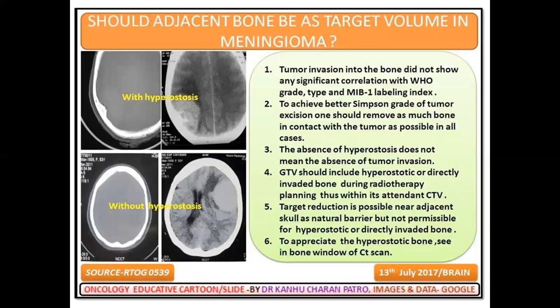Another area of conflict is hyperostasis. Tumor invasion into the bone did not show any significant correlation with WHO grade 2 or MIB-1 index level. To achieve a better Simpson grade of tumor excision, one should remove as much bone in contact with the tumor as possible in all cases. The absence of hyperostasis does not mean that absence of tumor — it may still be present.